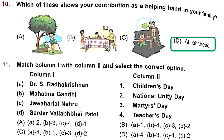Question 11: Match column 1 with column 2. Dr. S. Radhakrishnan matches with Teacher's Day (4). Mahatma Gandhi matches with Martyr's Day (3). Jawaharlal Nehru matches with Children's Day (1). And Sardar Vallabhbhai Patel matches with Unity Day (2). So the right answer is Option D: A-4, B-3, C-1, D-2.